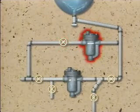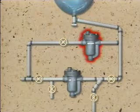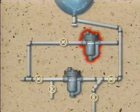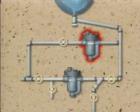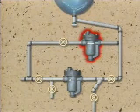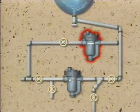Sometimes a steam trap is installed in the bypass line. Then if the main trap fails, the bypass trap can be put into service and the problem of blowing steam through the bypass line is eliminated.